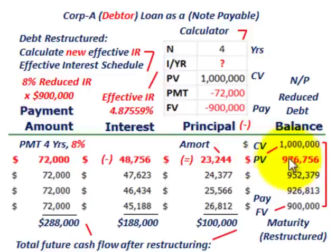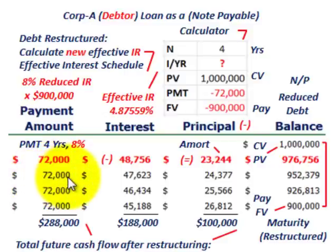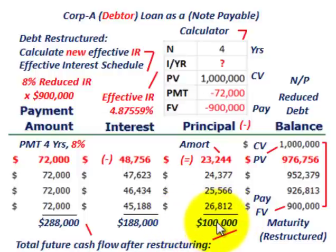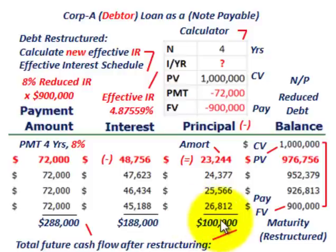Continue in that fashion: take the effective interest rate times your new carrying amount to get the new effective interest. Subtract from the cash payment amount to get the amortized amount, which reduces the beginning balance until you reach $900,000. Effectively, total effective interest is $188,000, total cash payments are $288,000, and the amortized amount is $100,000 — reducing from $1,000,000 down to $900,000.